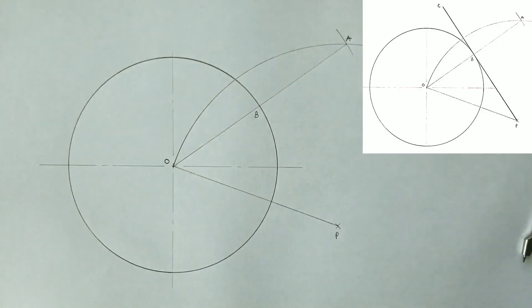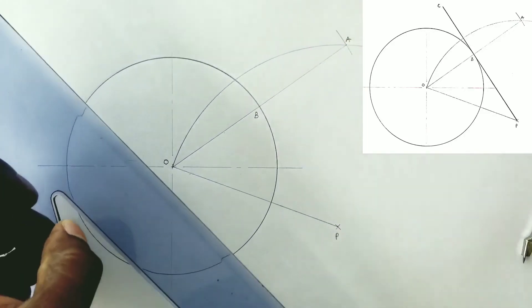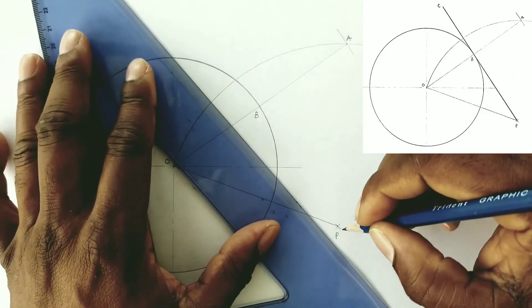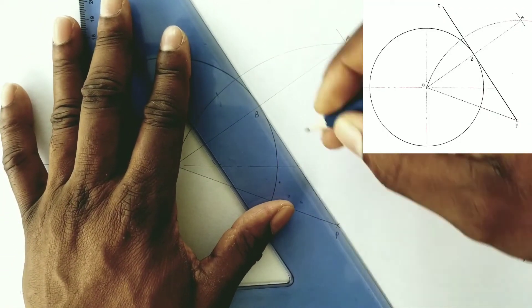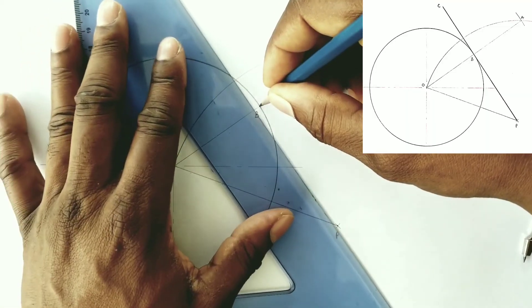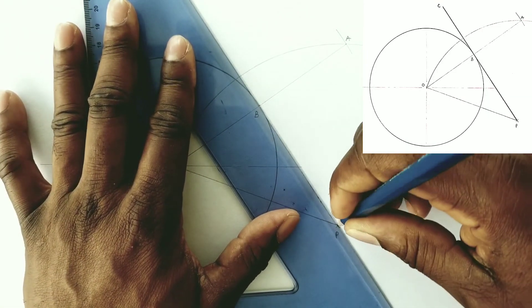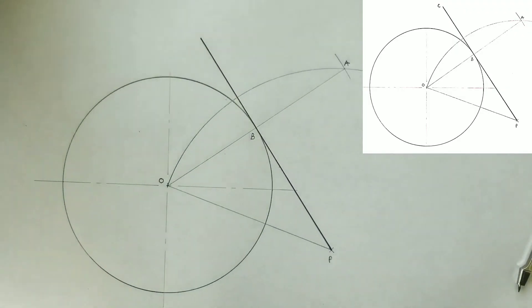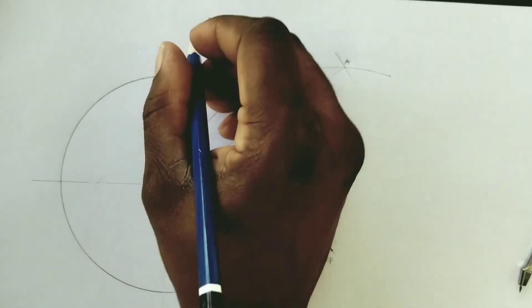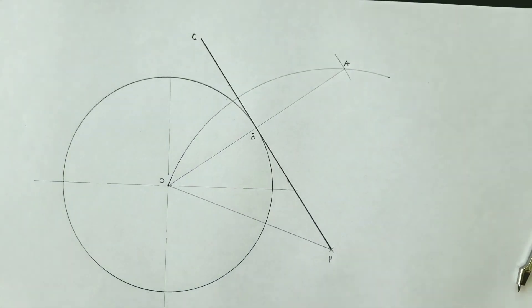Now we are able to draw our required tangent from point P passing through point B. This required tangent is an outline. We will now label point C of our tangent, giving us a required tangent C, P.